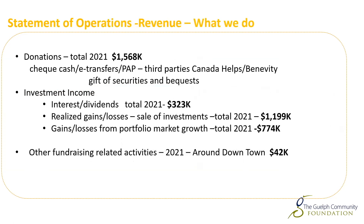Getting into the statement of operations or activity — in the revenue section, we take all of those transactions that we collect and fit them into three major categories. Our donations come to us either by check, cash, or e-transfers. Some of the people at this presentation have pre-authorized monthly payments. We also use Canada Helps and Benevity as third-party collection agencies where people can use their Visa cards and that money comes to us a week in arrears generally.